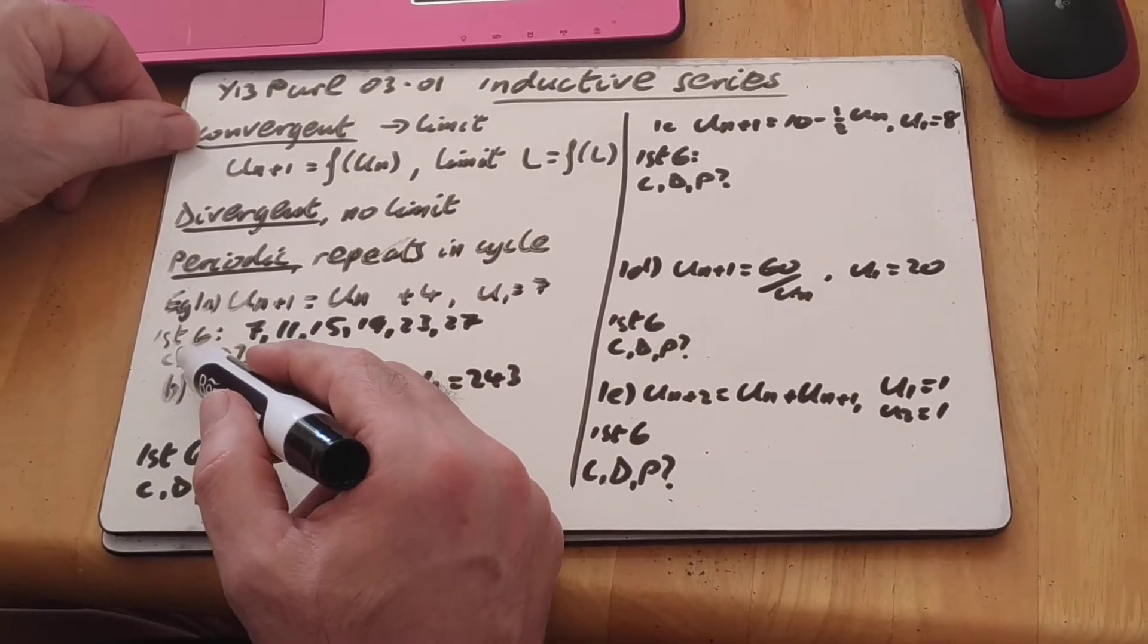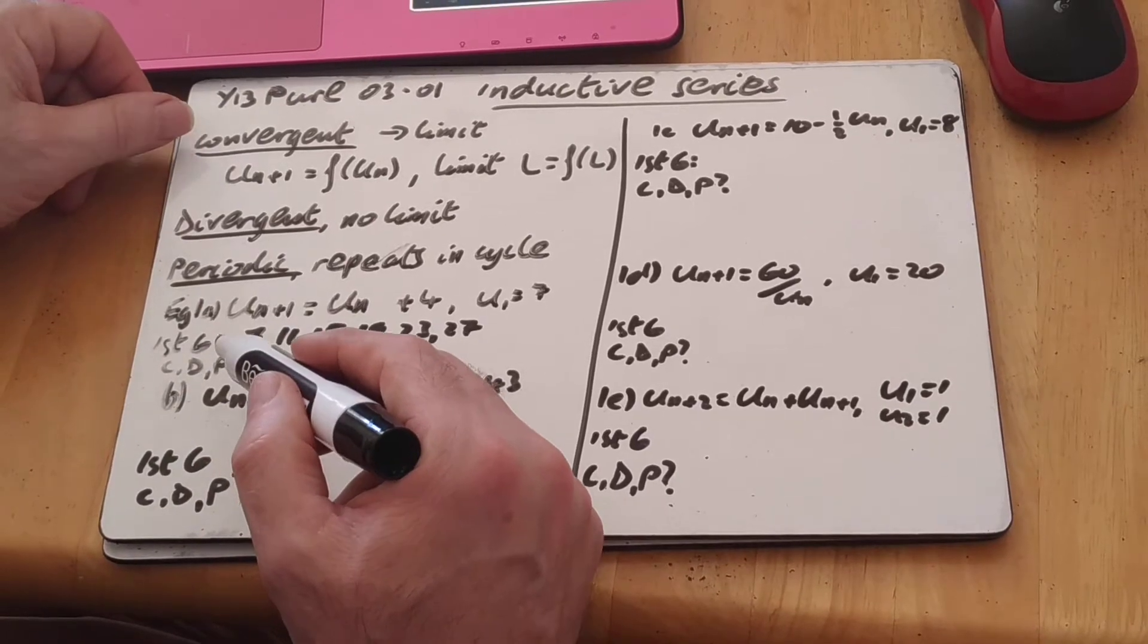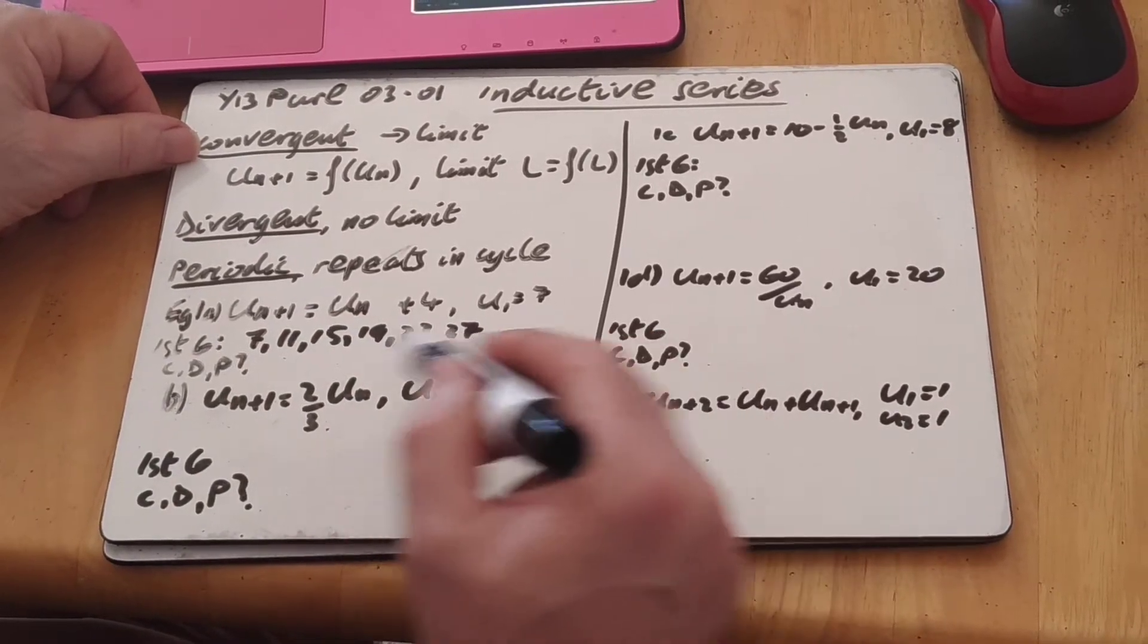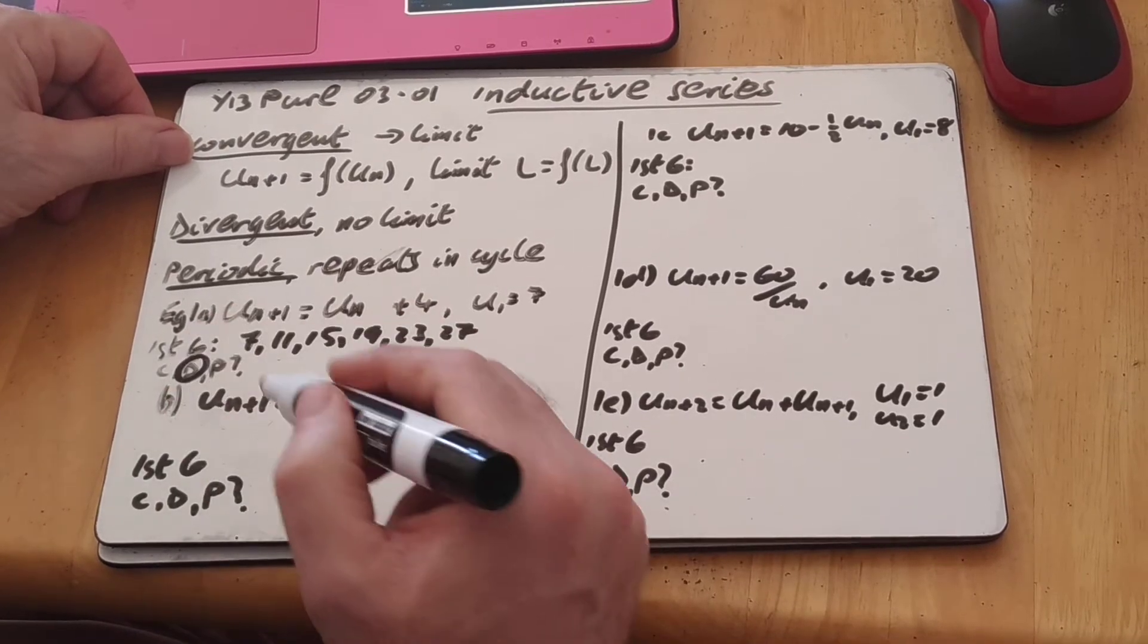And then it's asking whether it's convergent, divergent, or periodic. Well, it's not convergent at all, it's going to keep on going up and up and up, it's not periodic, so it's divergent.